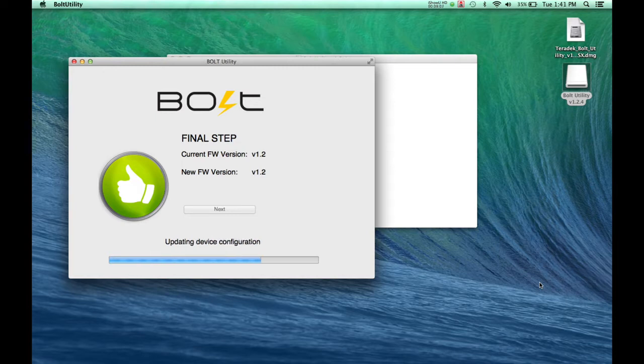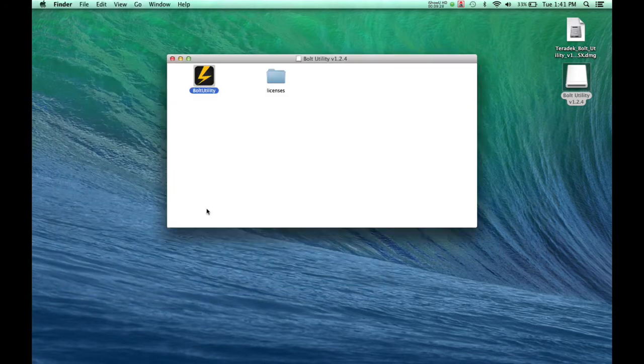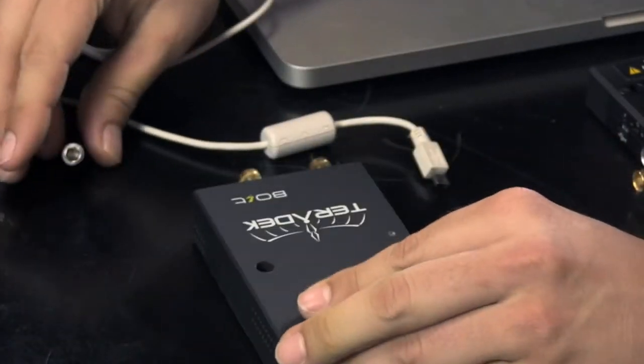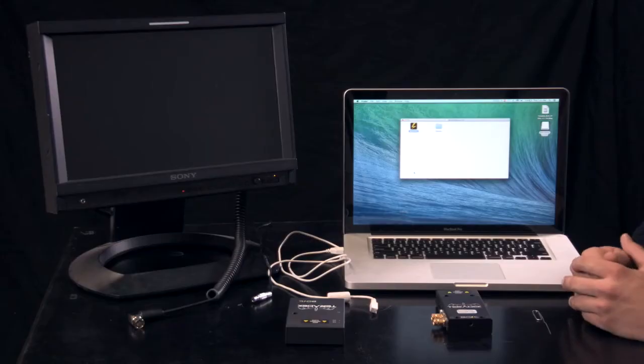When the upgrade is successful, click Done. Unplug the USB and power. Your transmitter and receiver are now updated with 1.2 firmware.